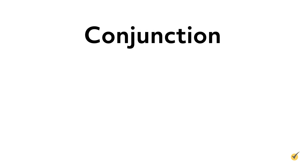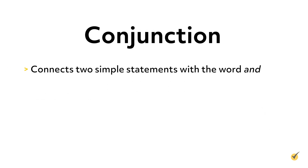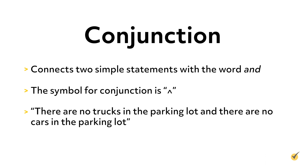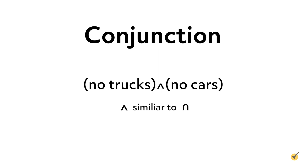The second logical operator is conjunction, which essentially connects two simple statements with the word 'and.' The symbol for conjunction is an upside-down V. So if we wanted to say 'there are no trucks in the parking lot and there are no cars in the parking lot,' we could write this. This statement would be true only if the parking lot contained zero cars and zero trucks. Notice that the conjunction symbol is similar to the symbol for intersections of sets — a conjunction may be thought of as a type of intersection because we use the word AND to show that two statements, like sets, are fulfilled simultaneously.